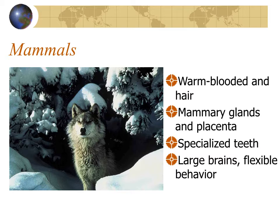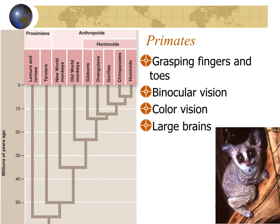Even more clearly, we are mammals. We have hair, mammary glands, we give birth to live young nourished by a placenta, and then nourished by the mammary gland after birth. We have specialized teeth like canines, incisors, and molars, and like all mammals we have large brains and flexible behavior.